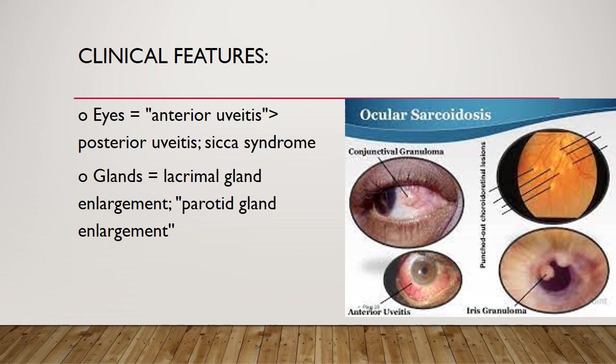In the kidneys there will be renal stones. Eye involvement is characterized by anterior uveitis. The uvea is the combination of the ciliary muscle, iris, and choroid plexus. Anterior uveitis is more common than posterior uveitis.